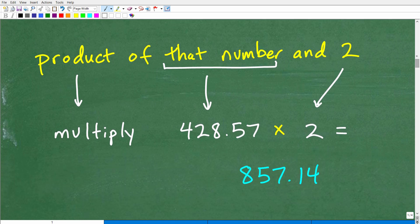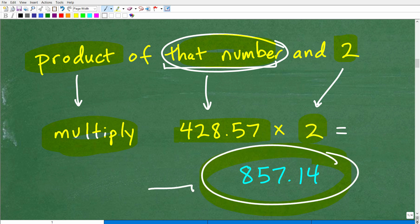So now we need to find the product of that number and 2. Well, what is that number? Well, that number is about 428.57, and the product means we're going to multiply. We're going to multiply that number and 2 together. So 428.57 times 2 is going to get us approximately 857.14, and there you go.